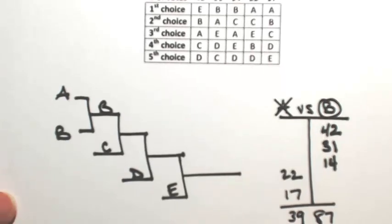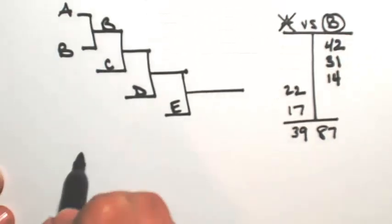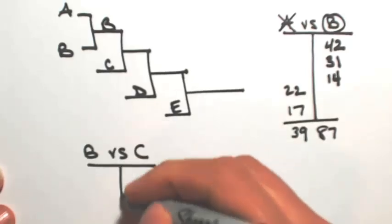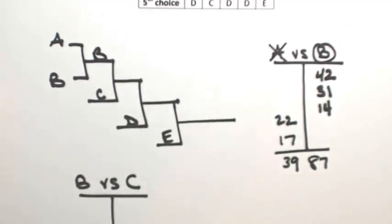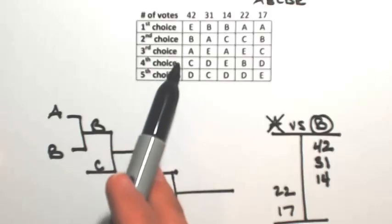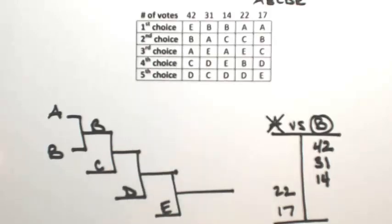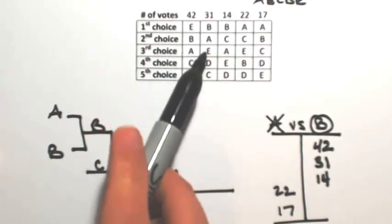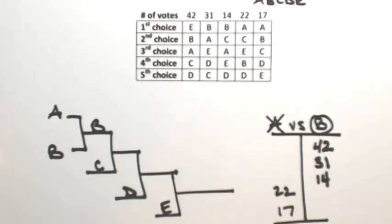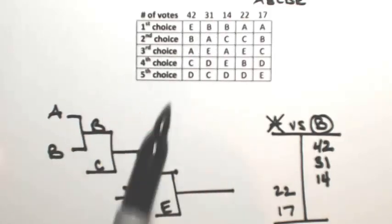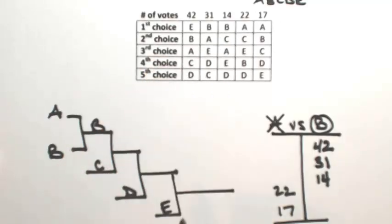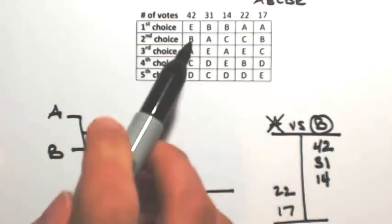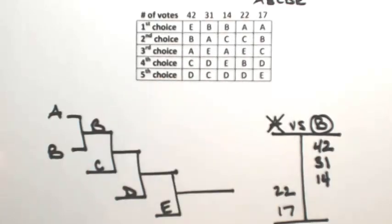So now we're going to do B versus C. In each column, we're going to see which one is more preferred. In the first column, B is over C, so B gets 42. B is over C, so B gets 31. B again is over C, so B gets 14. C over B, so C gets 22. And then B over C, so B gets 17.